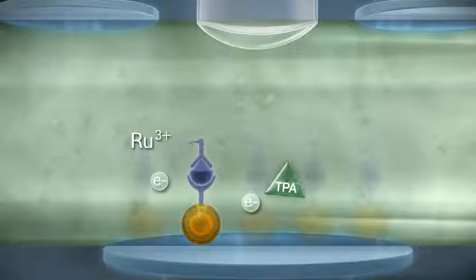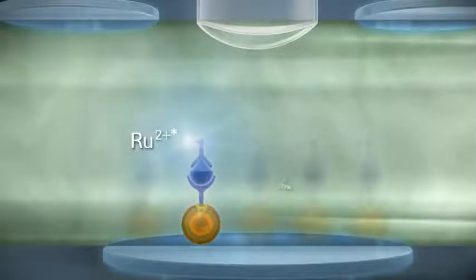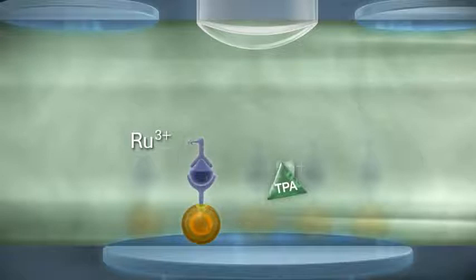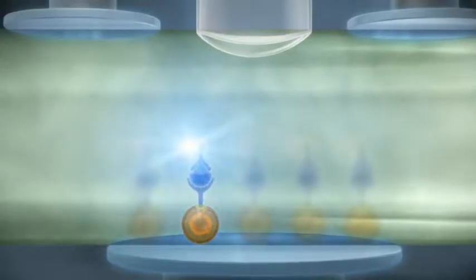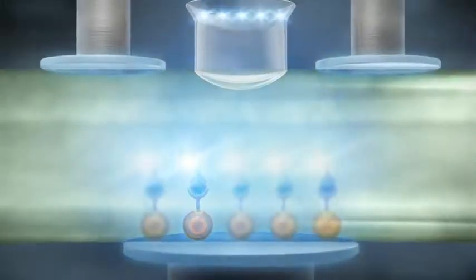Voltage triggers the ECL reaction. Ruthenium and TPA are excited in the process. The TPA radical then serves as a reductant, enabling ruthenium to return to its base state with the release of light. The electrochemiluminescence cycle repeats as long as voltage is applied, resulting in amplification of the light signal. The emitted light is detected by a photomultiplier.